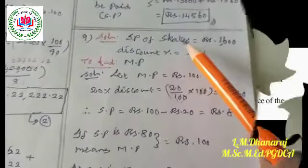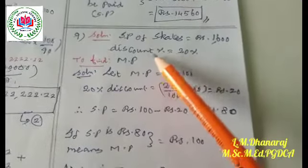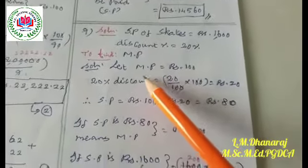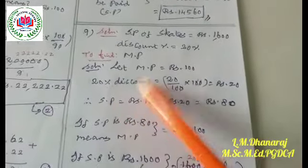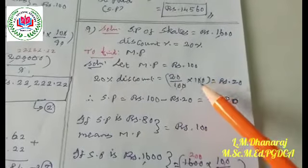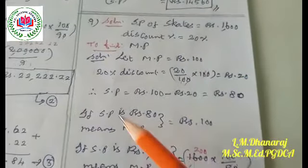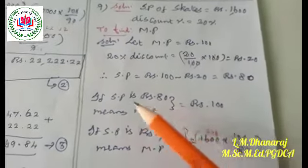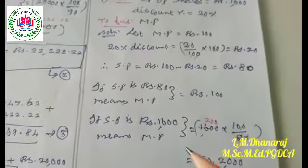The selling price of skates is rupees 1,600 and a discount of 20% is allowed. We have to find the marked price. Let the marked price be rupees 100. A 20% discount means the discount amount is 20 divided by 100 into 100, giving rupees 20. So the selling price is 100 minus 20, which is rupees 80.